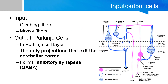Input to the cerebellum comes via only two cell types: the climbing fibers that excite the Purkinje cells directly, or mossy fibers that indirectly excite the Purkinje cells by exciting the granule cells first. The granule cells ascend into the molecular layer and form the parallel fibers, which then excite the Purkinje cells.